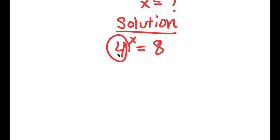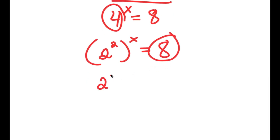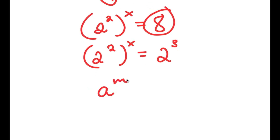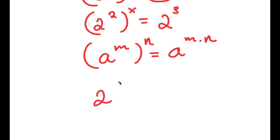Now, 4 is the same thing as 2 squared. So I'm going to rewrite this as 2 squared to the power of x — all I did was replace 4 with 2 squared. And 8 is the same thing as 2 to the power of 3. So I have 2 squared to the power of x equals 2 to the power of 3. And if I have something in the form a to the power of m to the power of n, this equals a to the power of m times n. So 2 to the power of 2 to the power of x equals 2 to the power of 2x, which equals 2 to the power of 3.